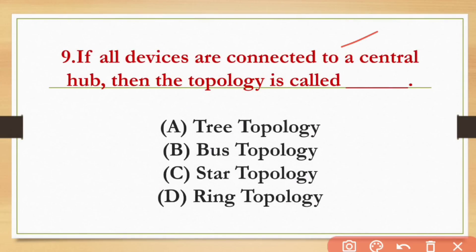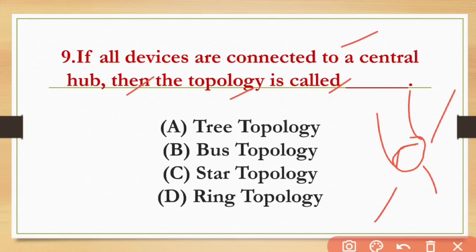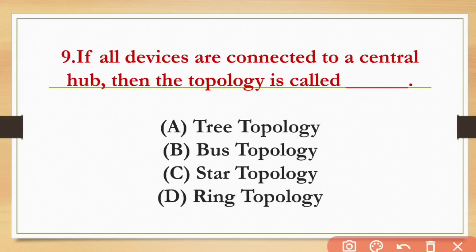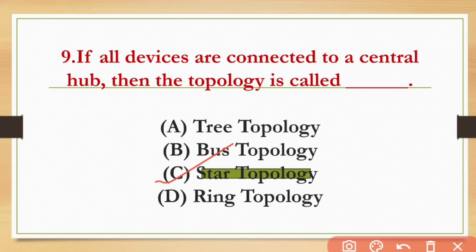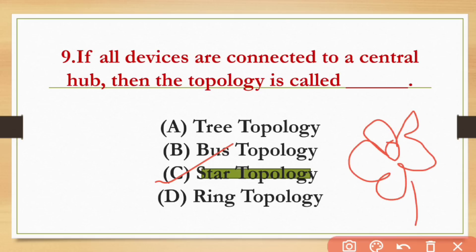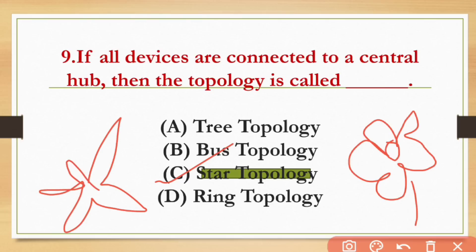If all devices are connected to a central hub, then the topology is called Star topology. When all devices connect to one central computer or hub, that is called Star topology.